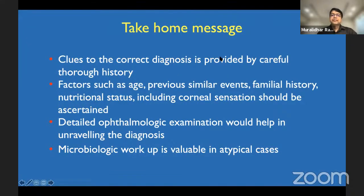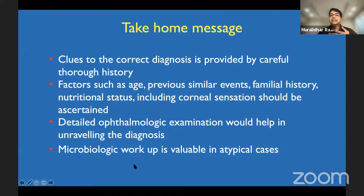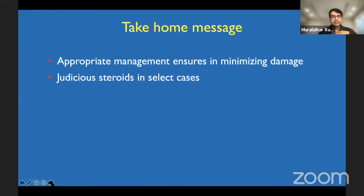In a nutshell, the clues to correct diagnosis are provided by careful history. One has to look at factors like age, previous similar events, family history, nutritional status, including corneal sensation, which should be ascertained on a case-to-case basis. A detailed systemic evaluation also helps in unraveling certain conditions. In atypical cases, one has to rely on microbiological workup — particularly for atypical presentations like fungus or Nocardia, which manifest as very unusual and low-virulent infections. Appropriate management ensures preserving the ocular surface. Steroids should only be considered judiciously if microbiology repeatedly shows negative.